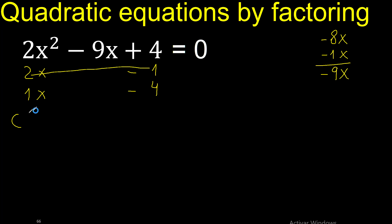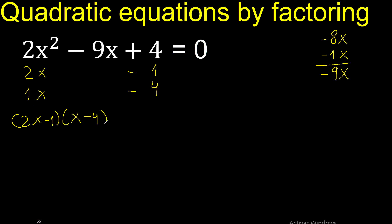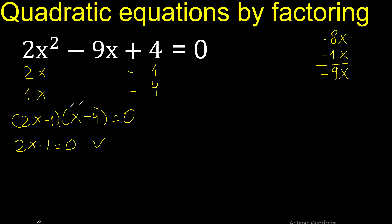Therefore like this: 1 multiplied by x is x, minus 4, equal 0. Multiplication — therefore this equals 0, or this equals 0.